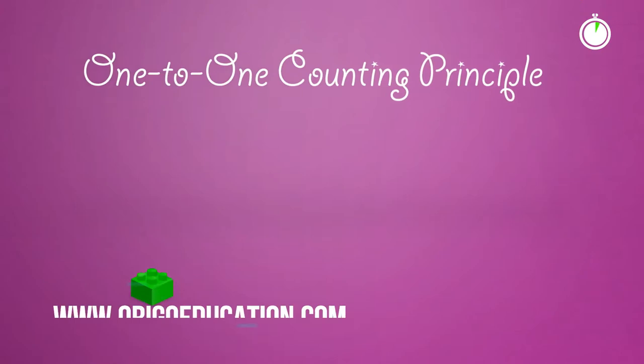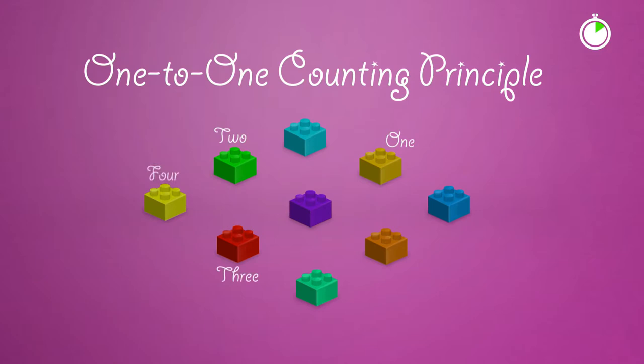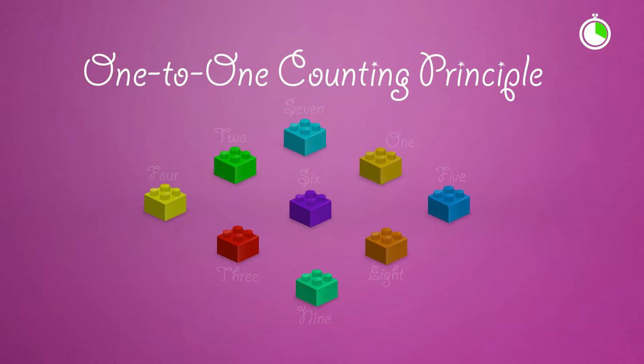As young children learn to count, they must remember to match each object with only one number name. This process is known as one-to-one correspondence. But some younger students count objects more than once — what can we do to help them overcome this?